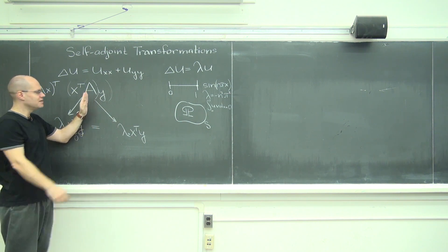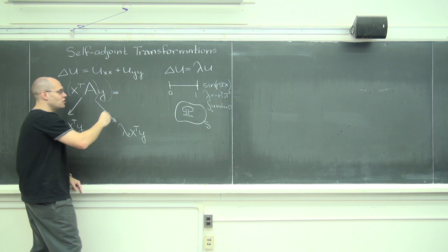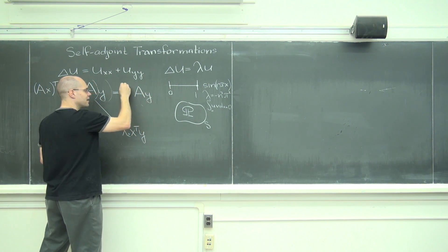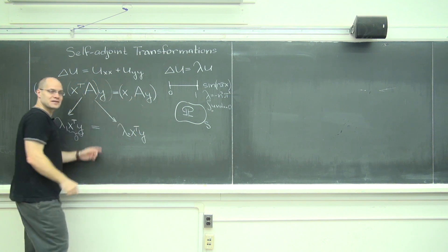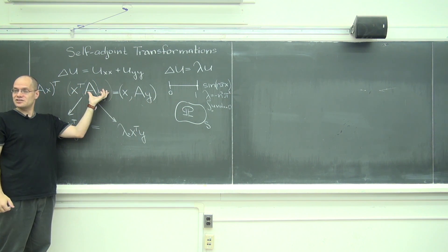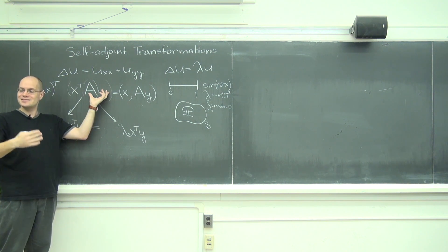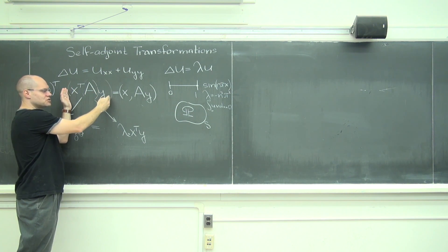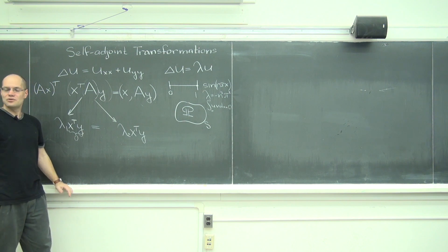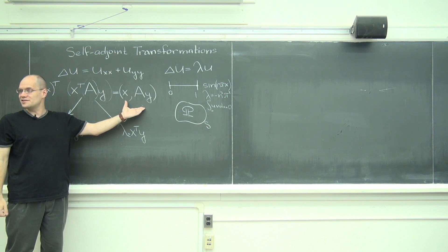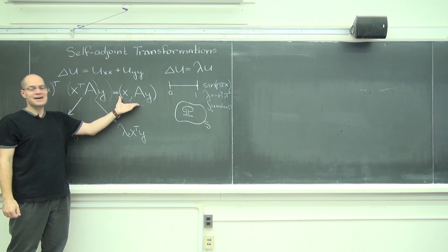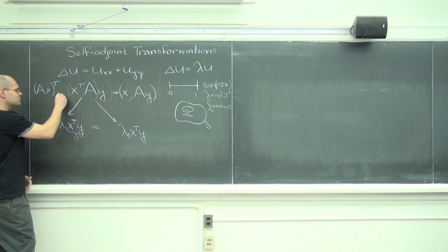Right, because when you multiply x transpose by some vector, it's dot product, it's dotting with respect to the standard inner product. So you can think of this matrix product as x dotted with A y, which is nice because there's no transpose here. That's why pure linear algebraists maybe like this over this.